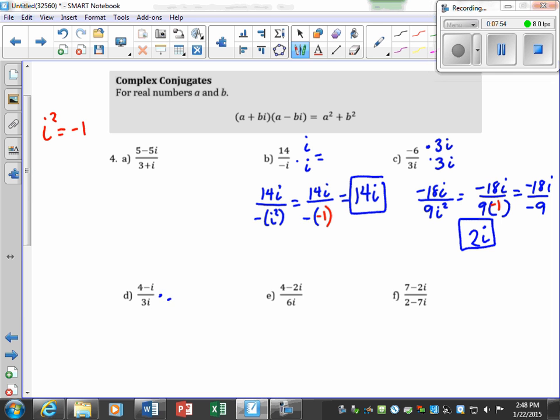Same thing for d, multiply times 3i, multiply times 3i, except for this is a binomial, so I'm going to say 4 times 3 is 12i. Negative i times 3 is negative 3i squared over 3 times 3 is 9i squared. So 12i minus 3, of course, wherever there's an i squared, replace with a negative 1, 9, and then where there's an i squared, I'm going to put a negative 1 again.